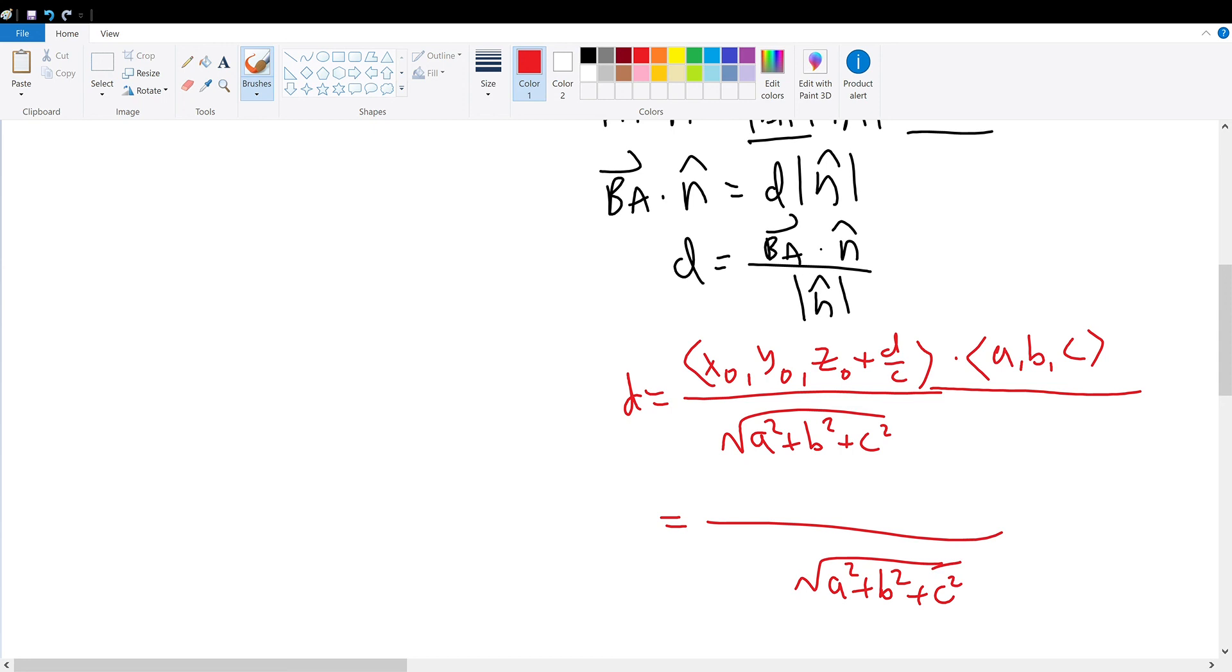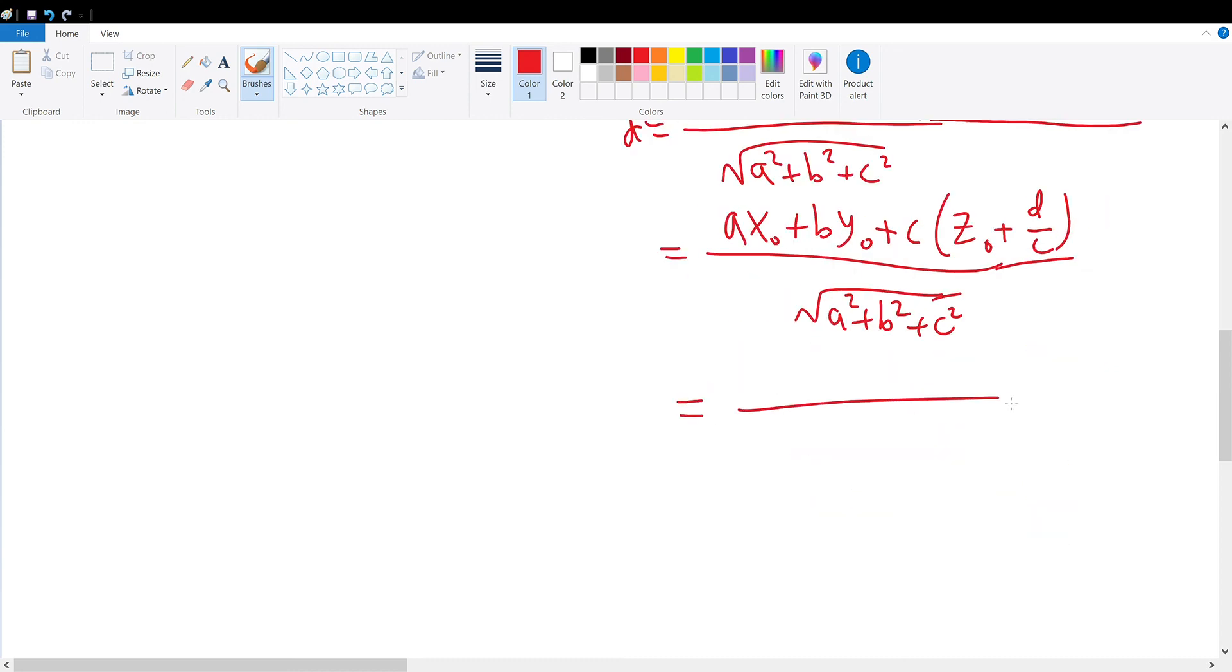X0 times A plus B times Y0 plus C times parentheses z0 plus d over c. And we apply the term C into each of the terms between the parentheses to get AX0 plus BY0 plus CZ0 plus D. And then, we take the absolute value of this. As remember, the distance between a point to the plane cannot be a negative value. Hence, proving the distance formula between a point and any given plane.